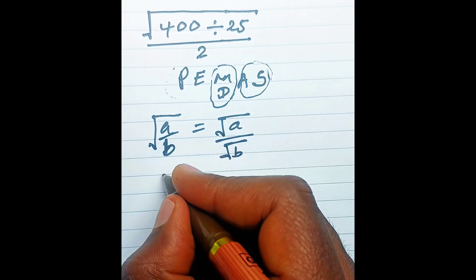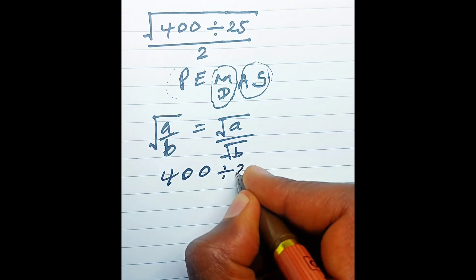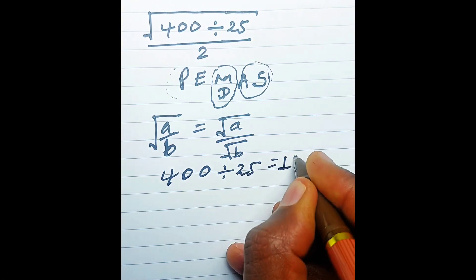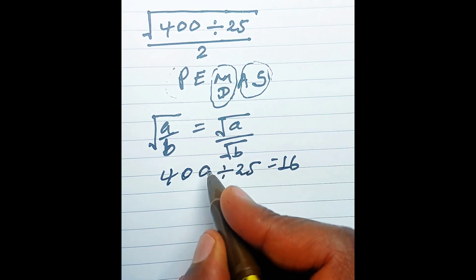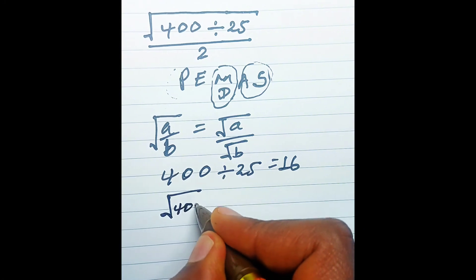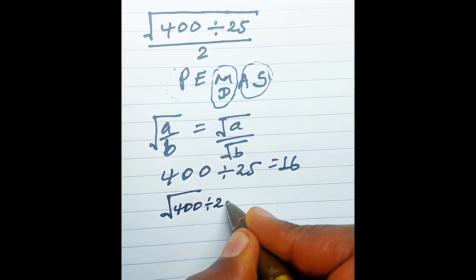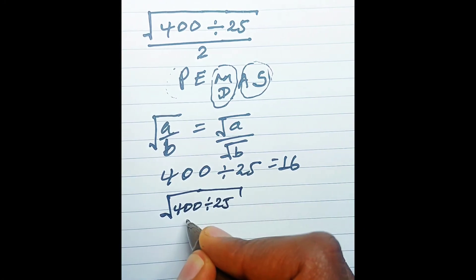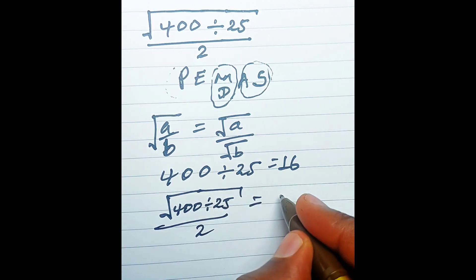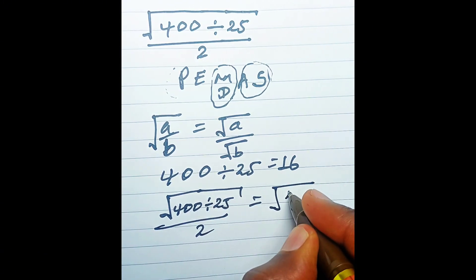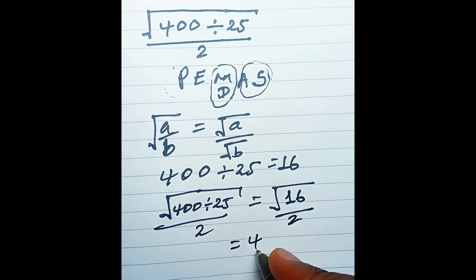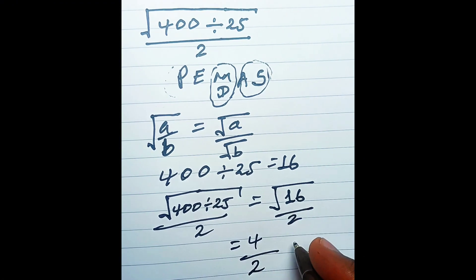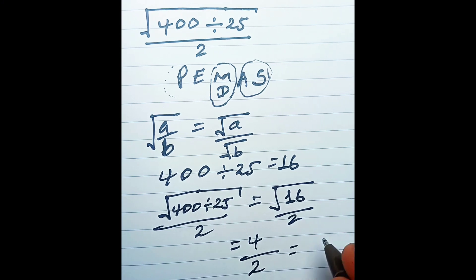So 400 divided by 25 equals 16. Now we can simplify: the square root of 400 divided by 25, over 2, equals the square root of 16 over 2. The square root of 16 is 4, and 4 over 2 is 2.